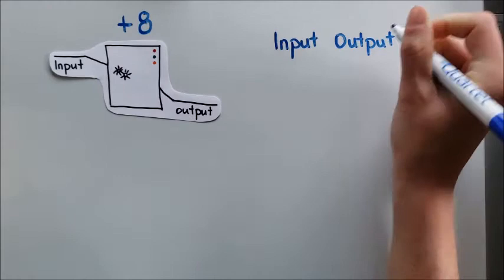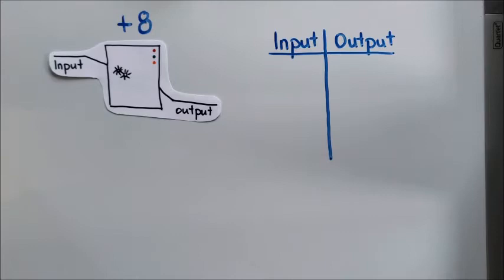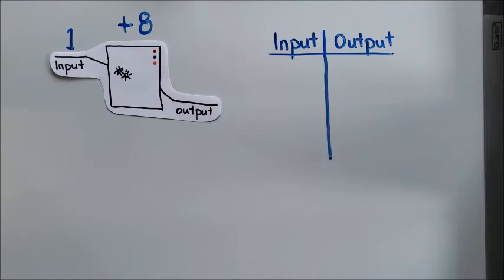The input is the number that I plug into my machine. So if I put a one into my machine, my machine is going to add eight. So my input is one. I'm going to add eight. So it's going to output nine. That means my output is going to be nine.